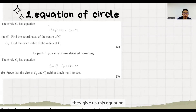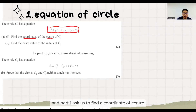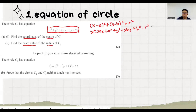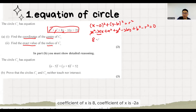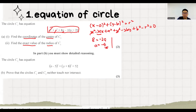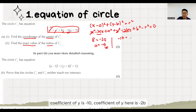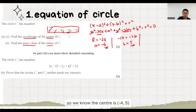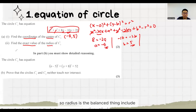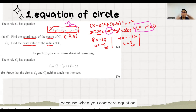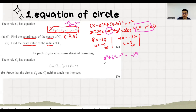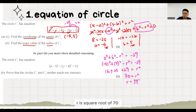The next question gives us a circle equation. Part 1 asks us to find the coordinate of the center, and part 2 asks for the radius. We expand and compare coefficients. The coefficient of x is 8 and equals minus 2a, so a is minus 4. The coefficient of y is negative 10 and equals minus 2b, so b is 5. The center is (minus 4, 5). For the exact radius, we balance the equation — the constant becomes negative 29 when moved to the left so the equation equals 0. Therefore r equals the square root of 70.